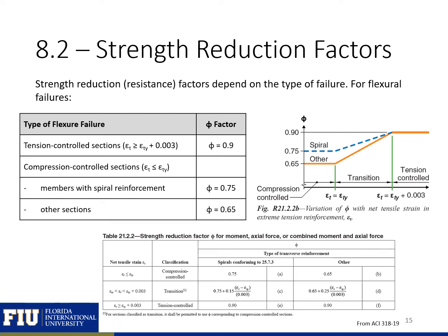Our strength reduction factors depend on the type of failure. For flexural failure, depending on whether we're tension-controlled or compression-controlled, we'll have different phi factors. Tension-controlled is a ductile failure — more predictable — so we have a higher phi factor of 0.9. Compression-controlled failures are more brittle with more variability, so phi factors are lower. For sections without spiral reinforcement, our phi factor will vary between 0.65 and 0.9 depending on the strain in our pre-stressing strands.